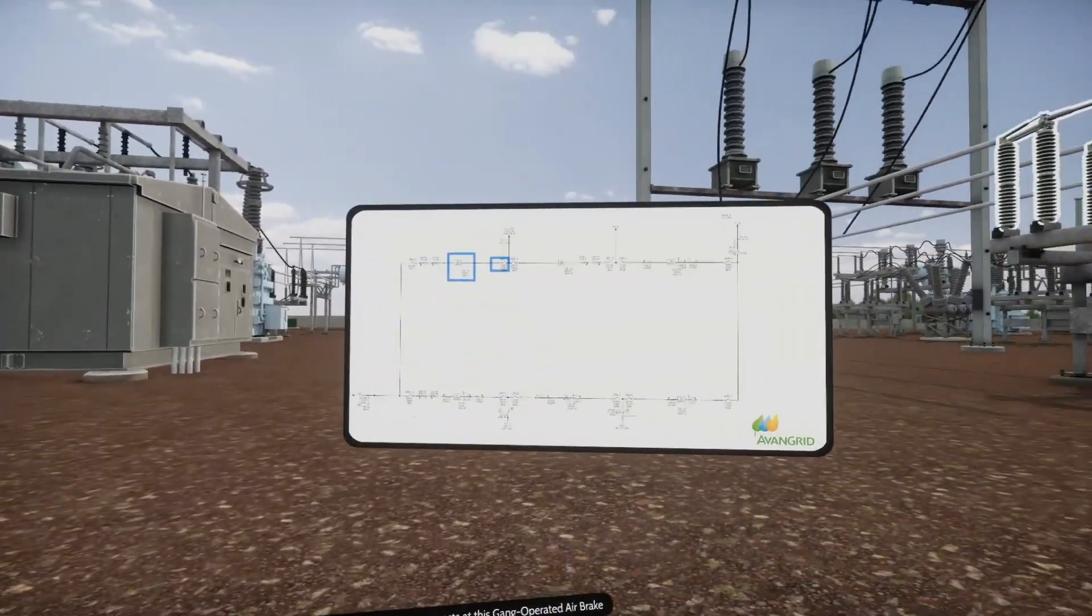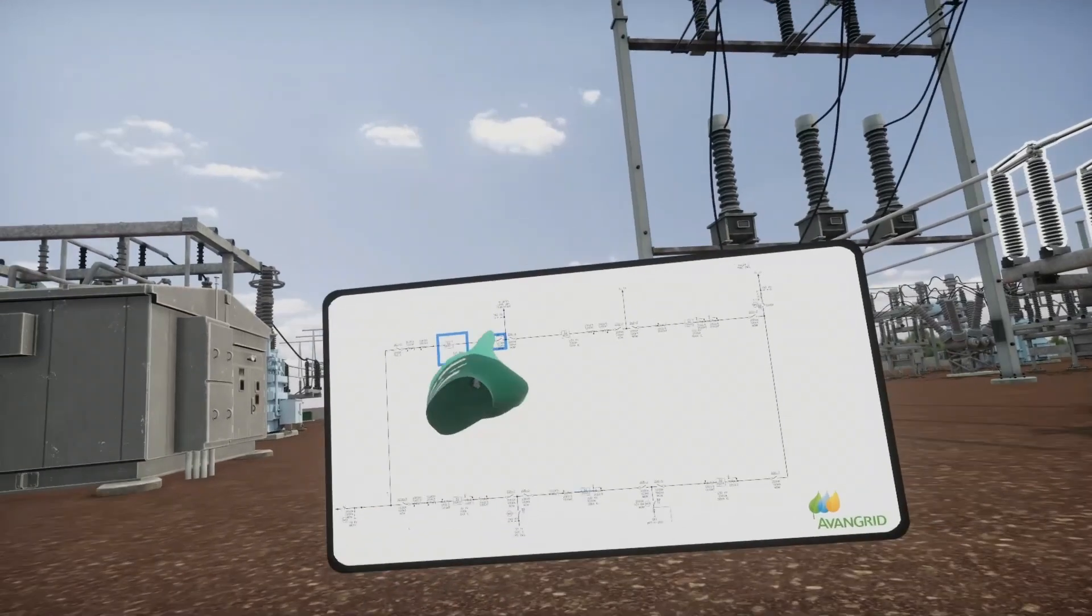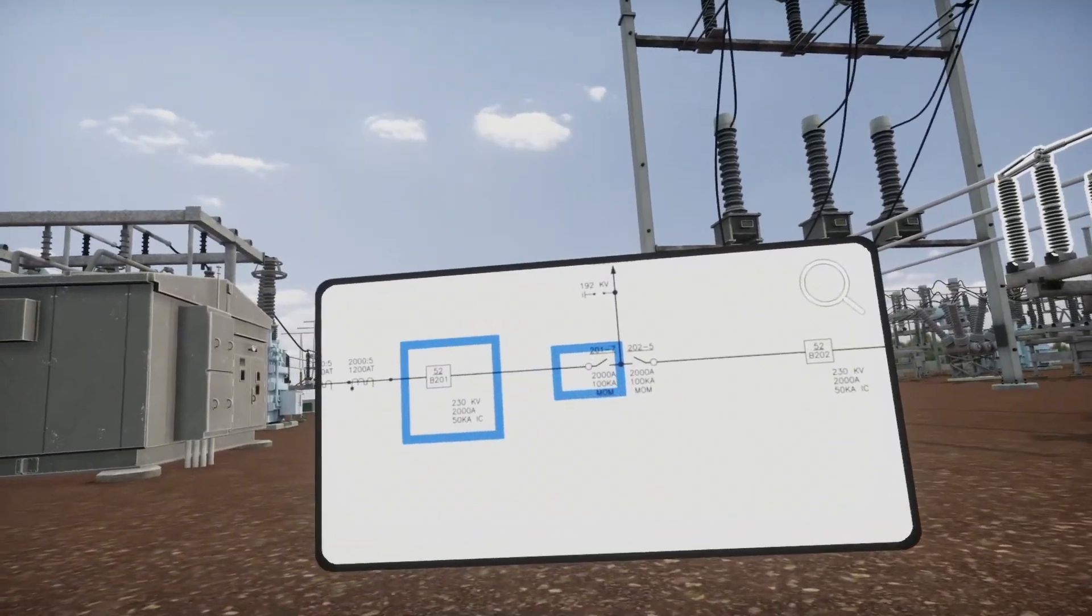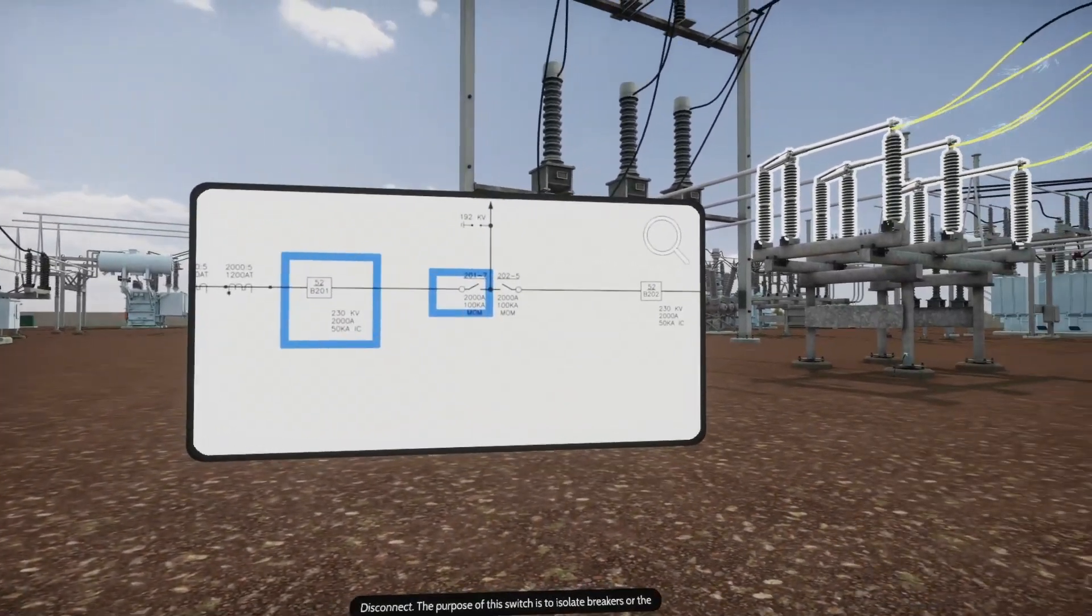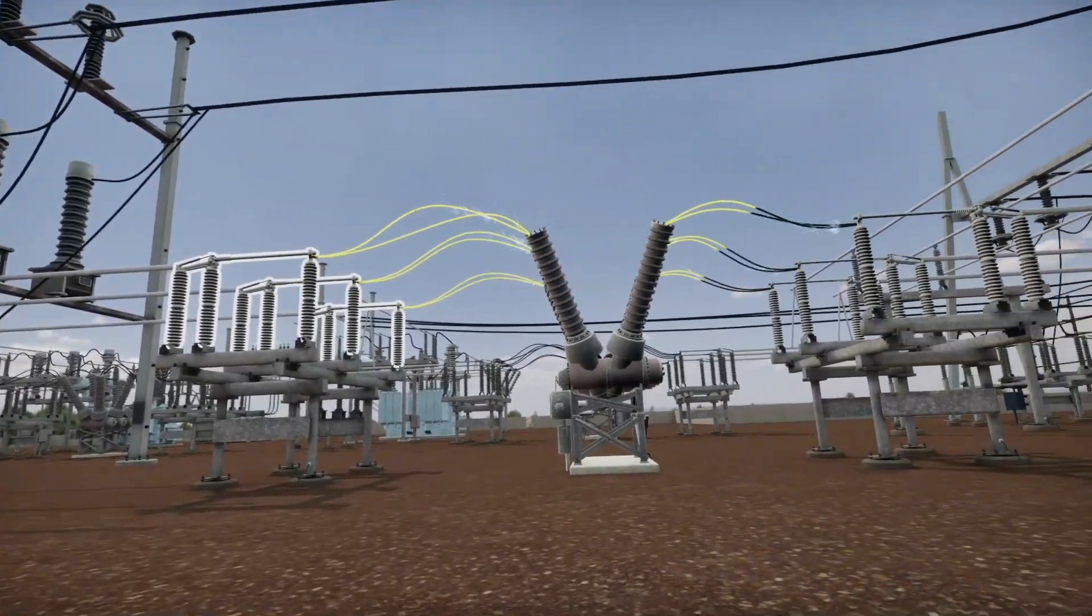Incoming distribution line connects at this gang operated air brake disconnect. The purpose of this switch is to isolate breakers or the bus from the incoming transmission line.